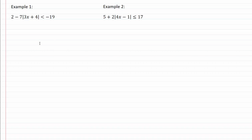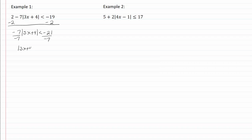In example one, notice that we have some other things there besides our absolute value. So the first thing we want to do is get this isolated, so let's move our negative two. Now we have negative seven times the absolute value of three x plus four is less than negative twenty-one. Divide by negative seven, so now we have the absolute value of three x plus four. Because we are dividing, that absolute value inequality has to change direction, so it's now greater than three.